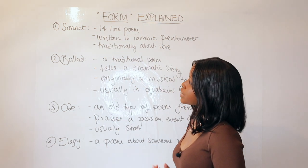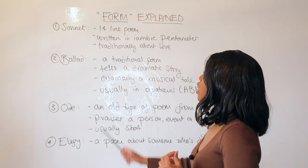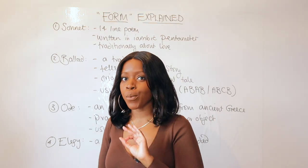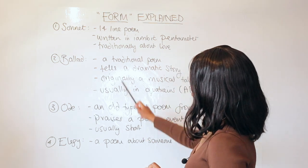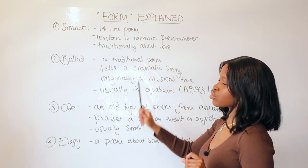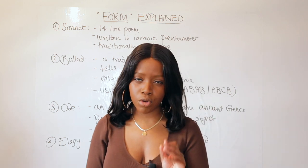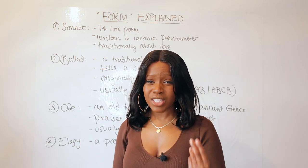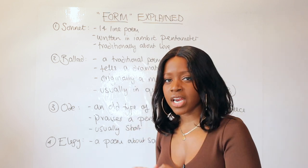It is what we call a sonnet. Remember that a sonnet is a 14-line poem—it must be 14 lines, no less or no more. It's written in iambic pentameter and traditionally about love. If you're not clear what iambic pentameter is, I have lots of lessons going over that.